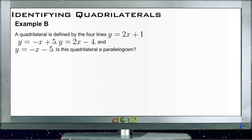Let's take a look at example B. Example B says a quadrilateral is defined by the four lines y equals 2x plus 1, y equals negative x plus 5, y equals 2x minus 4, and y equals negative x minus 5. Is the quadrilateral a parallelogram? Now remember, a parallelogram has two pairs of parallel sides. And if sides are parallel, then they have equal slopes.